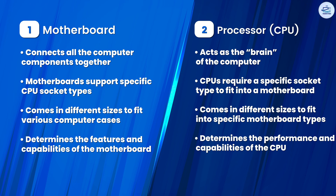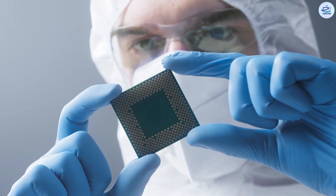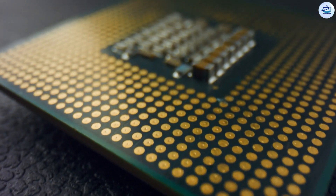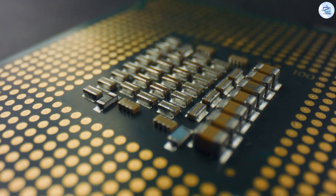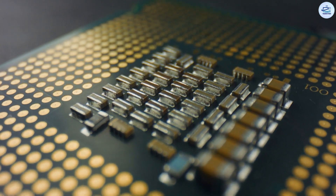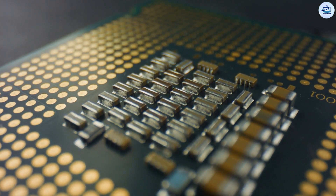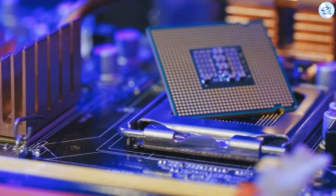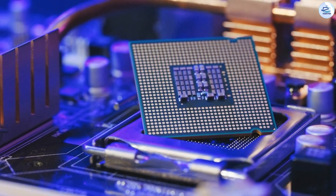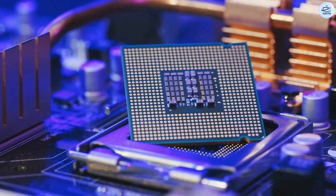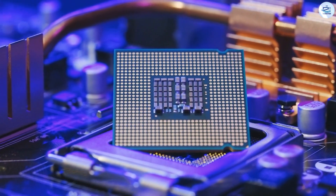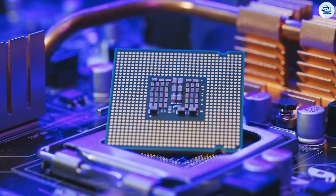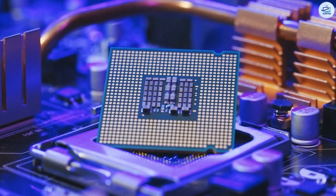Moreover, there are fast memory locations called registers inside the processor. They help to store and transfer data to other units as instructed by the CPU. The execution unit of the processor is called the core. A processor can have a single core or multiple cores. A single core processor is a unit processor. A processor with two cores is called a dual-core processor, and a processor with four cores is called a quad-core processor. Most new processors contain multiple cores to execute multiple instructions simultaneously.